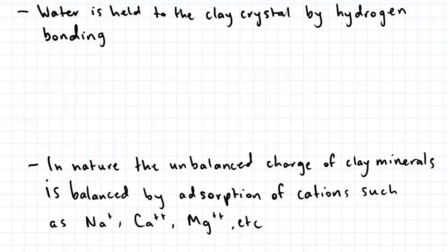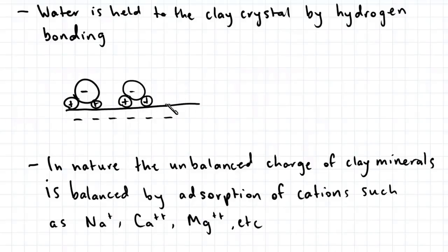Water is held to the clay crystal by hydrogen bonding. This is what it looks like when the water bonds to the surface of the clay crystal. So we have our surface of the clay crystal here, which is negatively charged. Here water molecules are bonded to the surface of the clay crystal and the hydrogen atoms are positively charged, which attract to the negative charge of the clay surface.